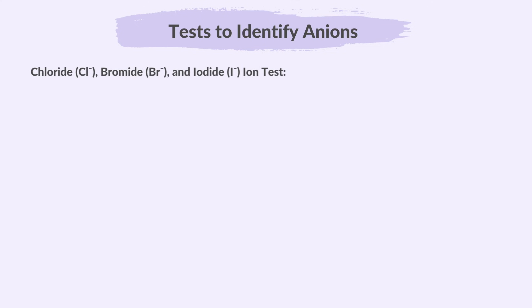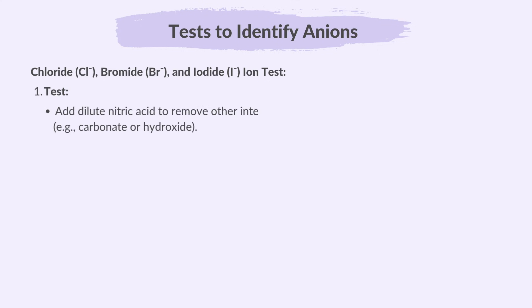For the chloride, bromide and iodide ion test, first add dilute nitric acid to remove other interfering ions, such as carbonate or hydroxide.